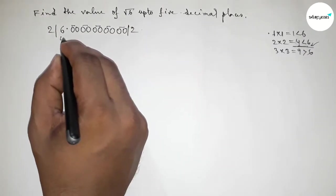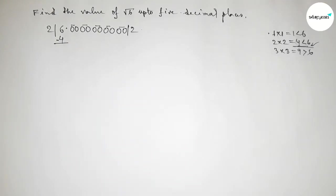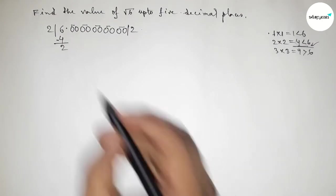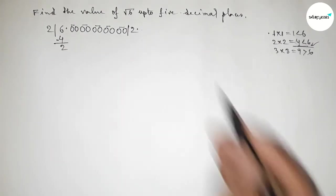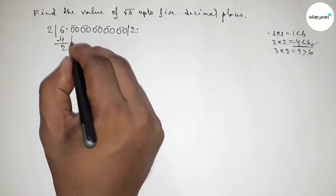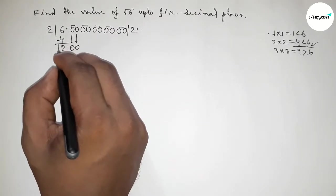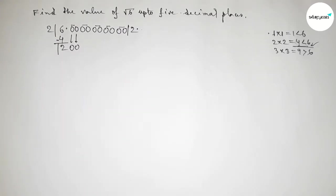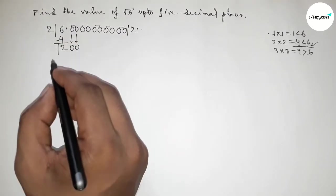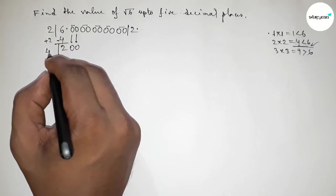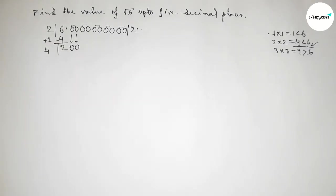So 2×2=4. Subtracting: 6−4=2. The decimal point goes here. Bring down the first pair of zeros. Now, an important step: the digit is 2, so we add 2+2=4. We need to take a number beside 4 and multiply by it to get a result less than 200.